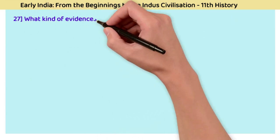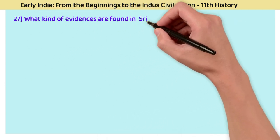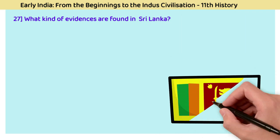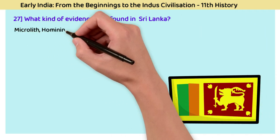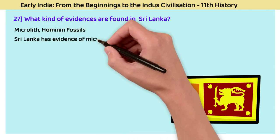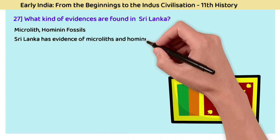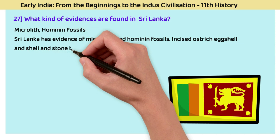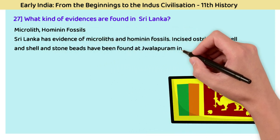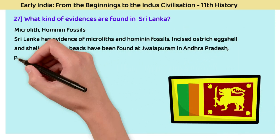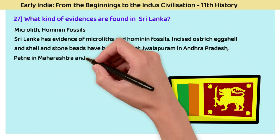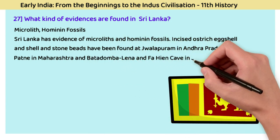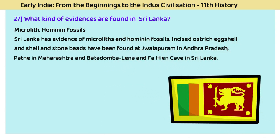Question 27: What kind of evidence is found in Sri Lanka? The answer is microliths and hominid fossils. Sri Lanka has evidence of microliths and hominid fossils. Incised ostrich eggshell and shell and stone beads have been found at Jwalapuram in Andhra Pradesh, Patne in Maharashtra, and Batadomba Lena and Fahien Cave in Sri Lanka.